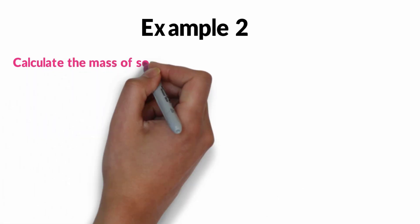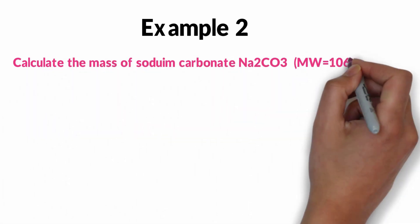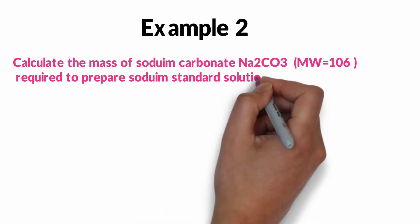Let's try another example. The question says calculate the mass of sodium carbonate, which has a molecular weight of 106, required to prepare sodium standard solution of 1000 ppm in one liter.